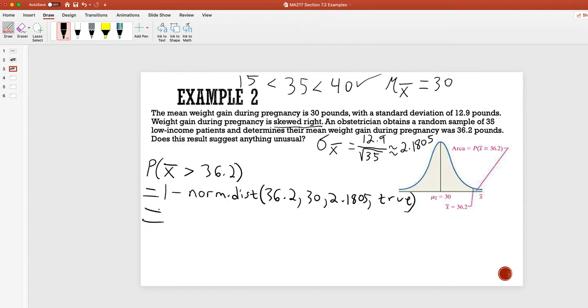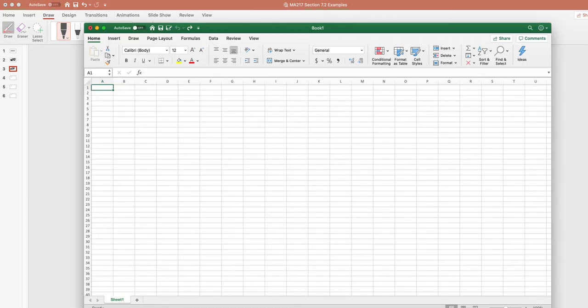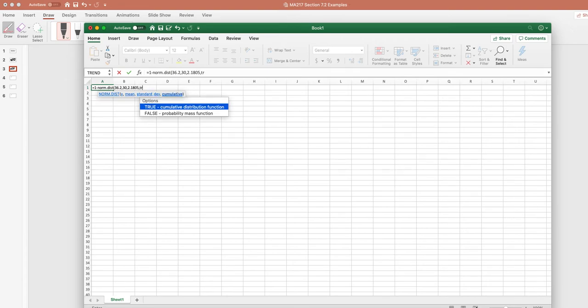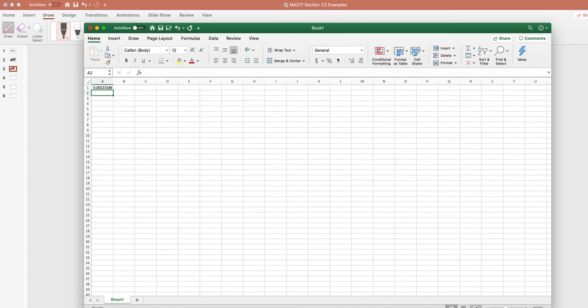And then, if we type that as is into Excel. So, this is going to be equals 1 minus norm.dist of 36.2, 30, 2.1805, and true. This will give us a probability of about 0.0022.